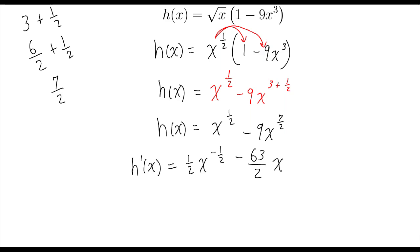Negative 9 times 7 over 2 is negative 63 over 2. x to the 7 halves power minus 1 power. I'll do that off to the side. 7 over 2 minus 1, that's the same thing as 7 over 2 minus 2 over 2, that's 5 over 2.